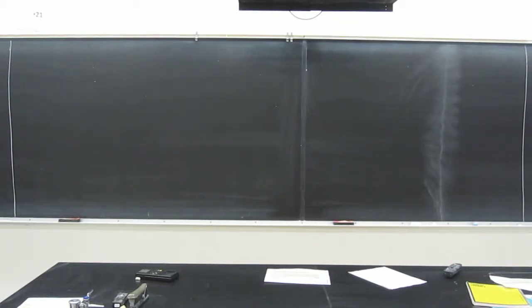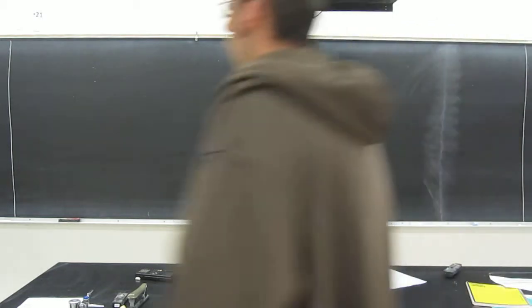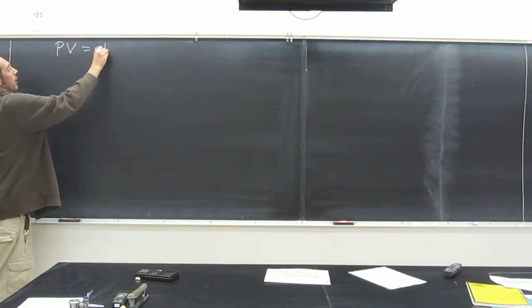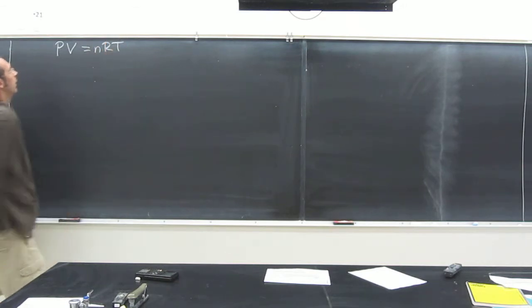The first thing we'll do today is the application of Avogadro's law, but like I said, I'm going to break it down with this PV equals nRT thing. So, PV equals nRT is the ideal gas law.